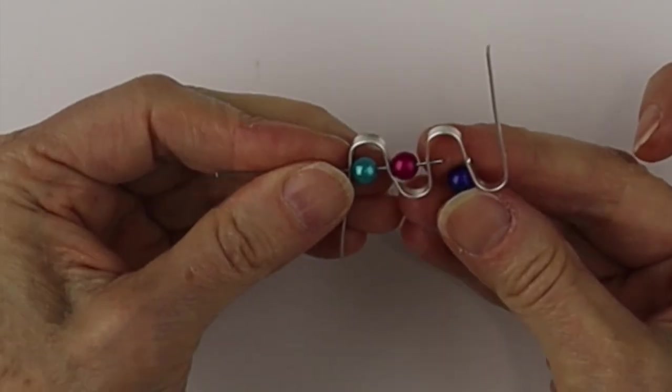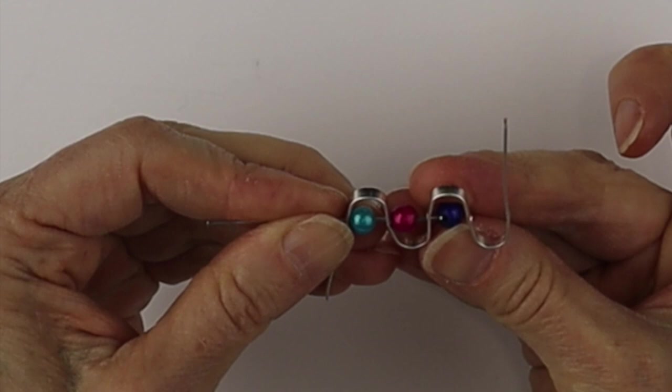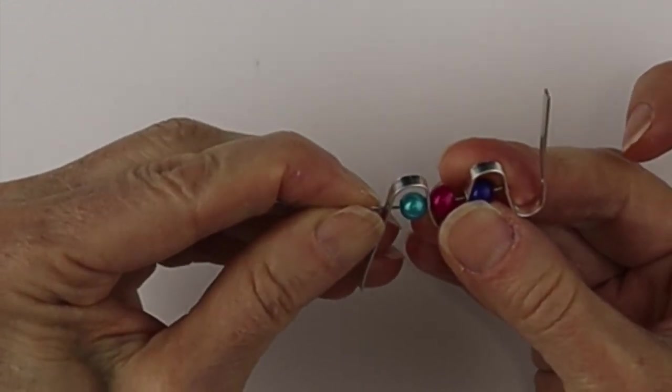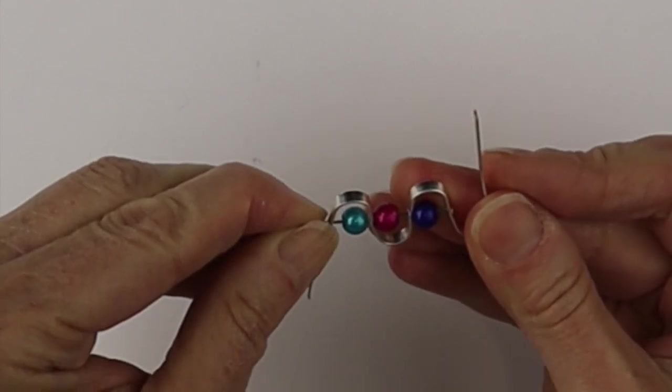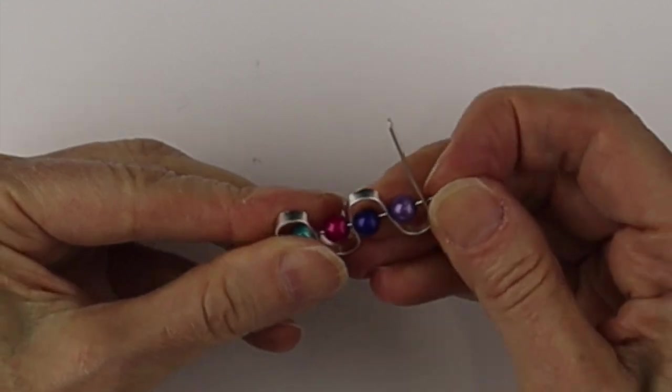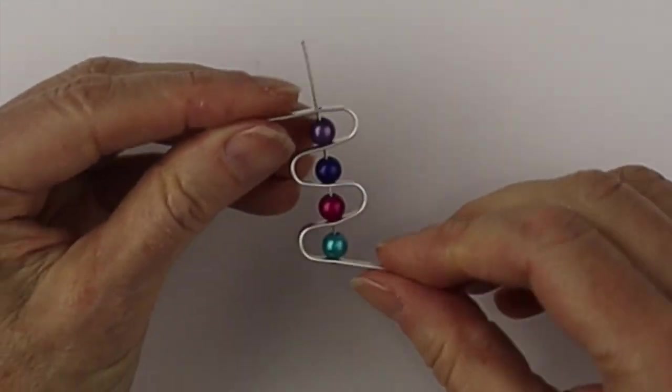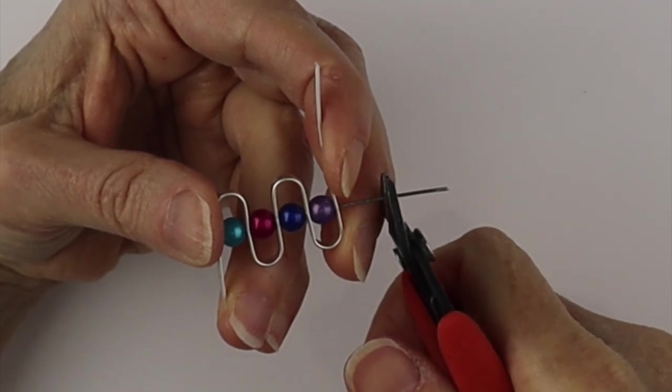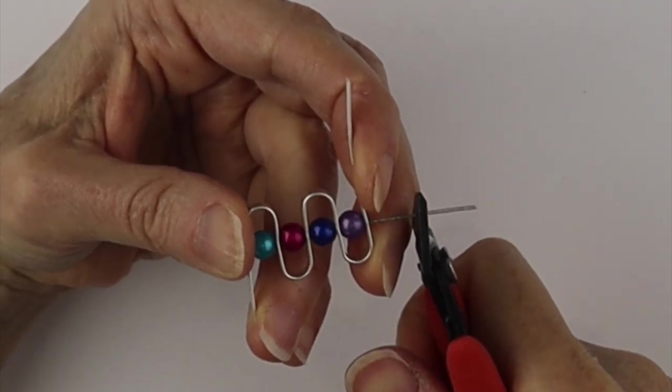Just go slowly and pop on those beads. I love these miracle beads. I will link up where you can get them in the description below. We're just going to stack a few different colors of these six millimeter miracle beads. Once we've got that, we're going to press the wires together so there's no slack.